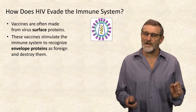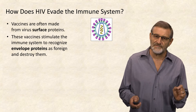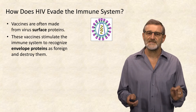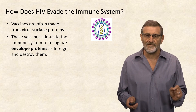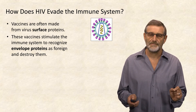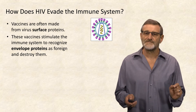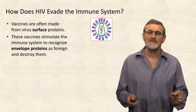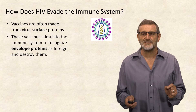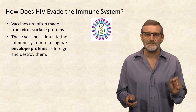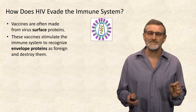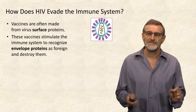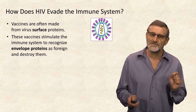To explain why it is so difficult to develop an HIV vaccine, let's consider how the HIV virus evades the immune system. The shell of the HIV virus is covered by envelope proteins, and the idea of an HIV vaccine is to stimulate the immune system so that it is able to recognize envelope proteins as foreign and to destroy them.